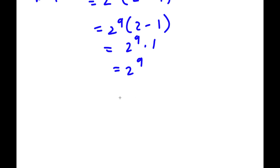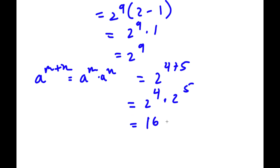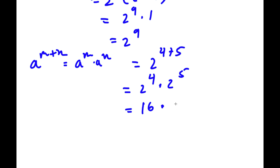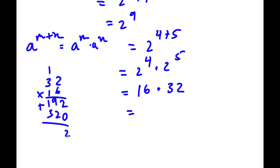I can actually simplify this a little further. Using the property a to the power of m plus n equals a to the power of m times a to the power of n, we can write 2 to the power of 9 as 2 to the power of 4 plus 5, which equals 2 to the power of 4 times 2 to the power of 5. Now 2 to the power of 4 is 16 and 2 to the power of 5 is 32. So we have 16 times 32, and multiplying these gives us 512 as our answer.